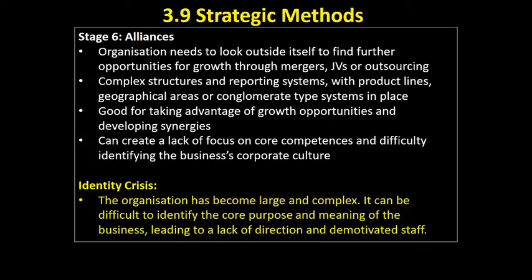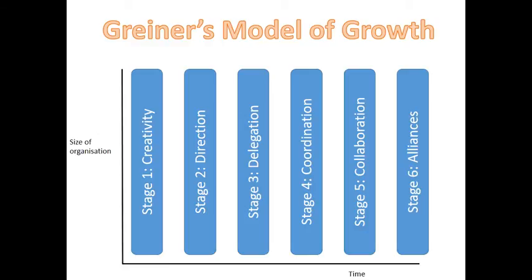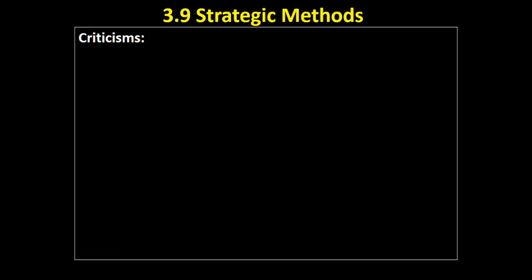That's Greiner's model of growth: over time we go through different stages, each brought to an end by a different crisis. This was based on research by Larry Greiner, conducted in academia in the US. What are the criticisms of this model?